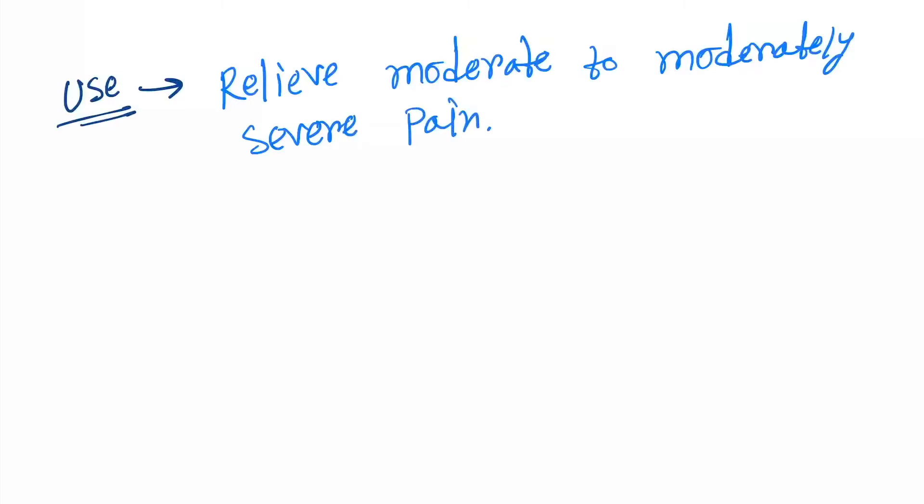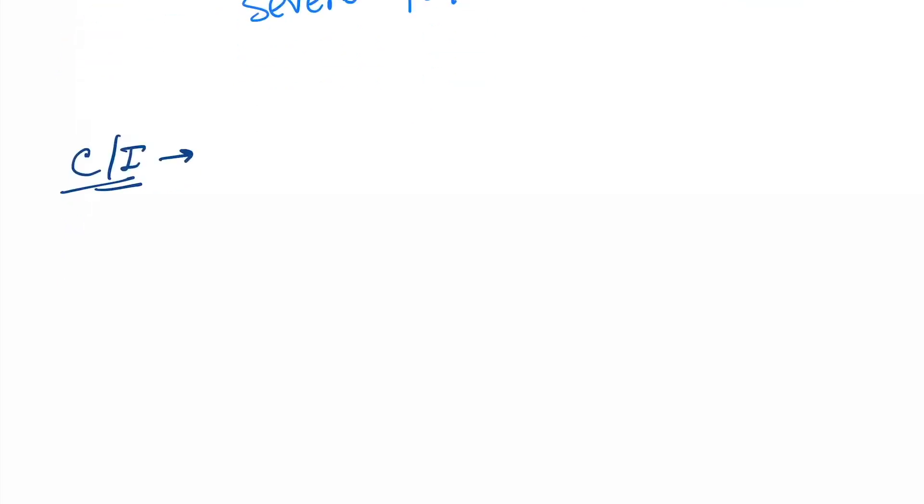Now the most important thing about the drug is the contraindications—that is, in which conditions we will not be able to use the drug. The first one is severe breathing problems.